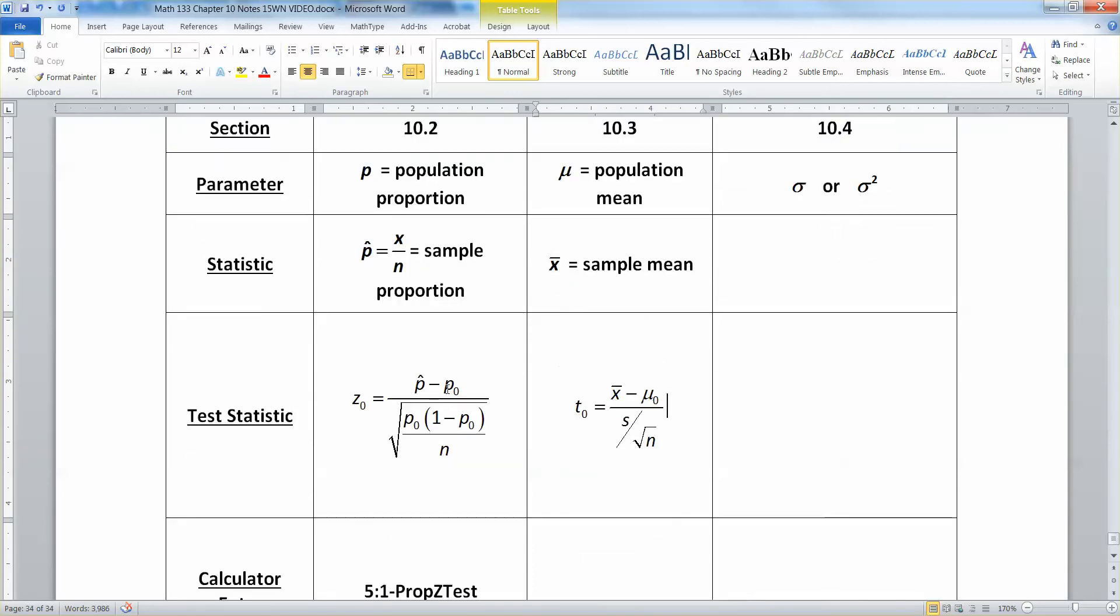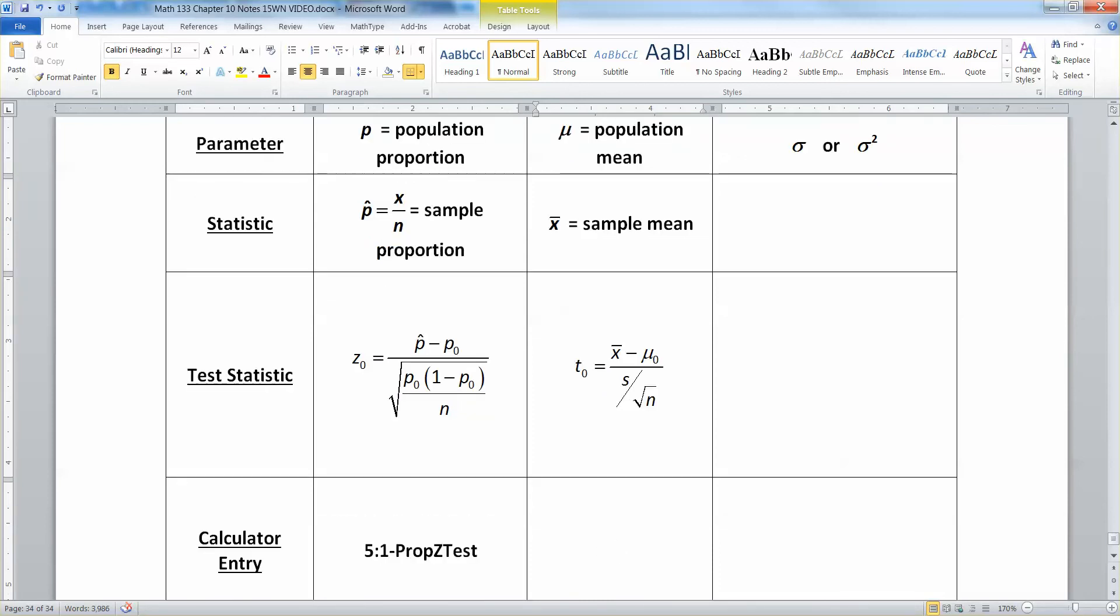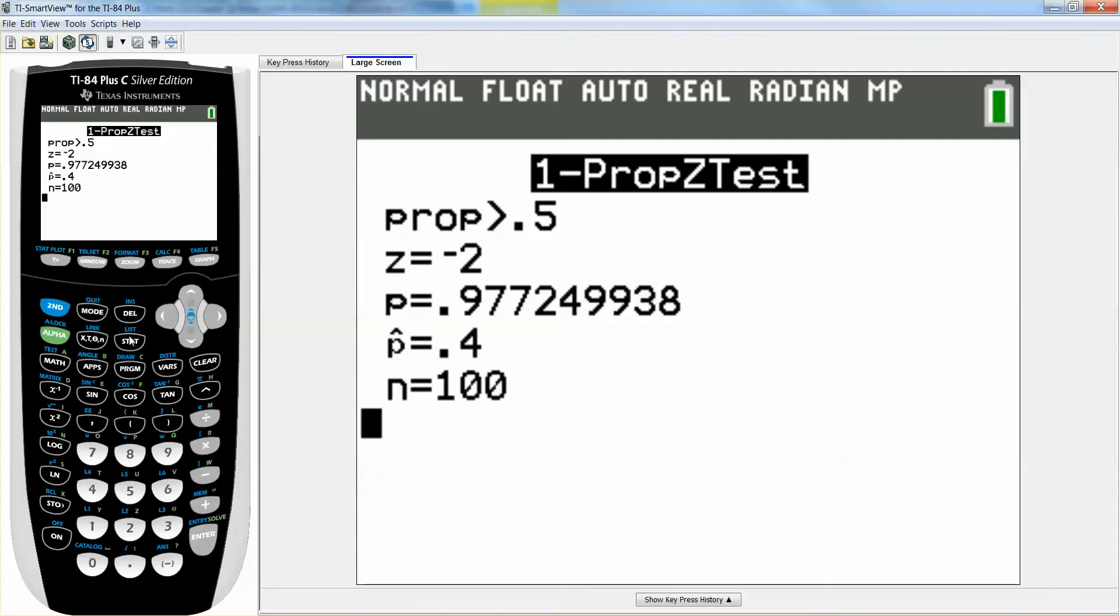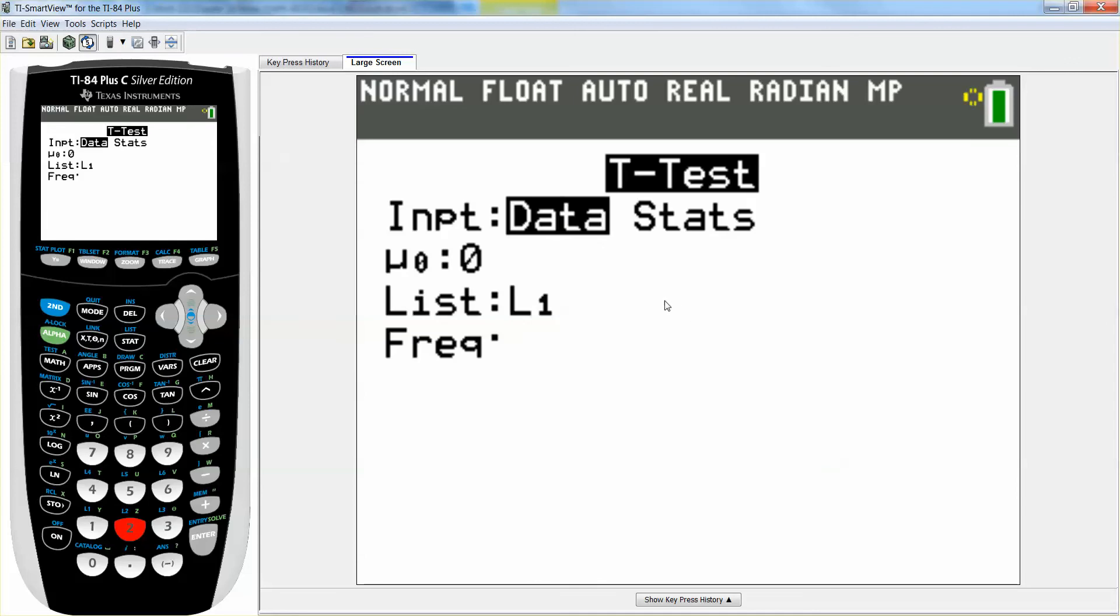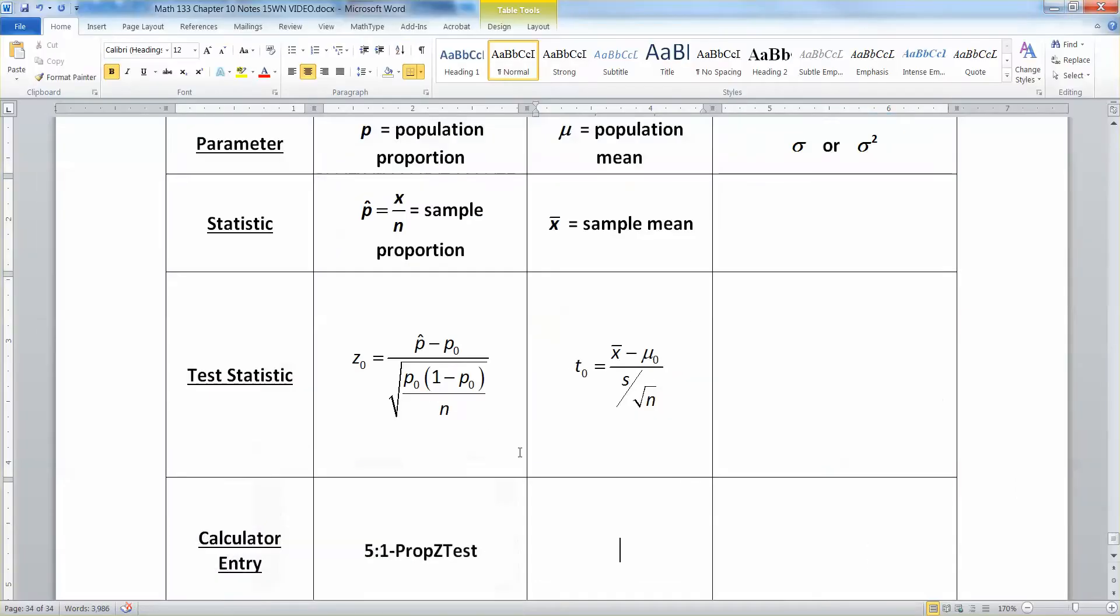Now, the test statistic for that is in this hypothesis test spreadsheet right here. It's right there. It's t0. So t0 equals x-bar minus μ0 over s over the square root of n. Don't forget that μ0 and p0, for that matter, are the assumed from the null hypothesis values. So you assume some p0 or some μ0, 0 goes with the 0 hypothesis, i.e. the null hypothesis. All right, now the test you're using here, let's go back and look at the calculator. Stat, tests. You're using number 2, which is a t-test.